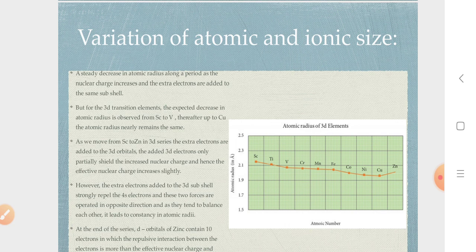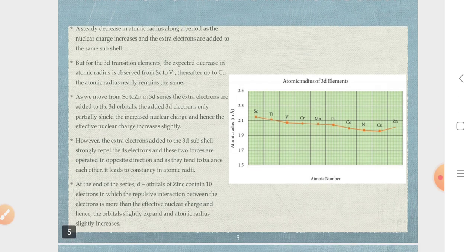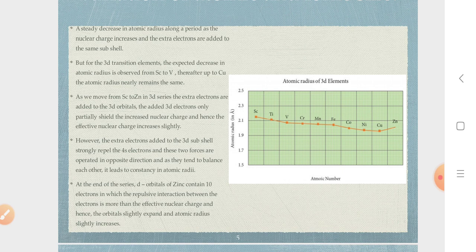As we move from Scandium to Zinc in 3D series, the extra electrons are added to the 3D orbitals. The added 3D electrons only partially shielded the increase in nuclear charge. Partially shielded nuclear charge increases. The effective nuclear charge increases slightly.